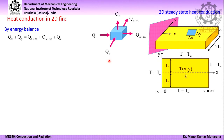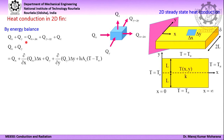We go for the energy balance: total energy in equals total energy out. Energy in is qx and qy. Energy out is qy plus delta y, qx plus delta x, and qc (convective heat transfer). You can rewrite: qx plus delta x becomes (∂/∂x of qx) times delta x. Then qy plus delta y becomes qy plus (∂/∂y of qy) times delta y. The expression for convective heat transfer equals h times area times delta T, where h is the convective heat transfer coefficient, A is the surface area, and delta T is the temperature difference — that is T minus T infinity.